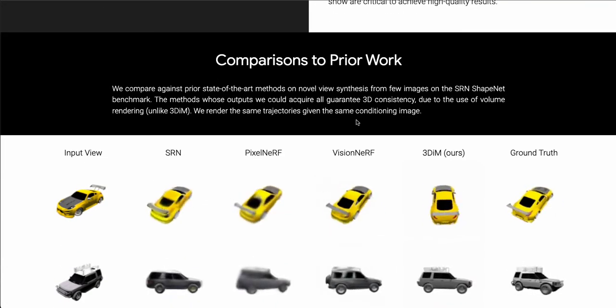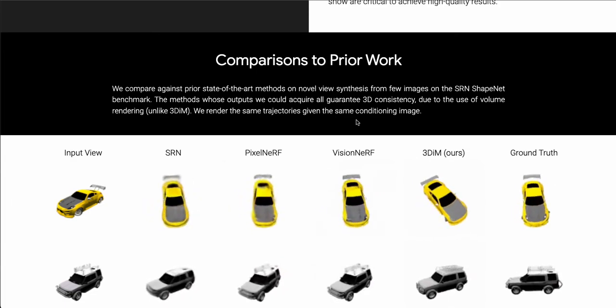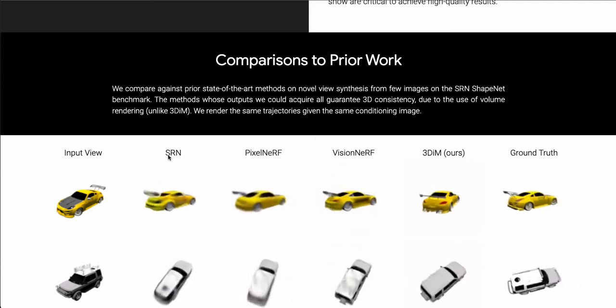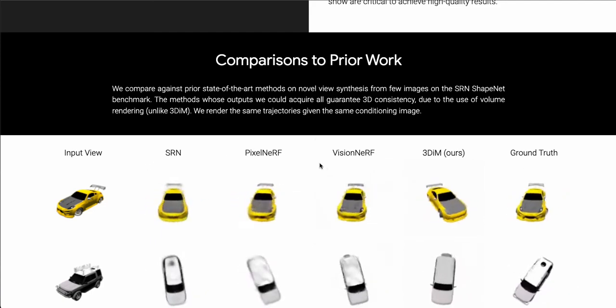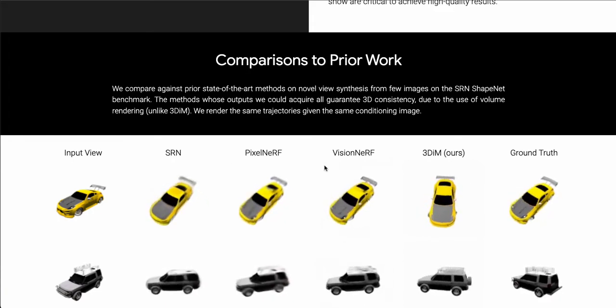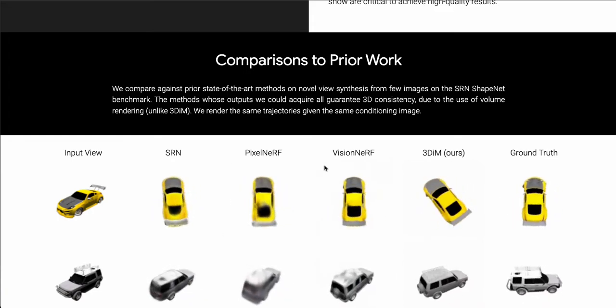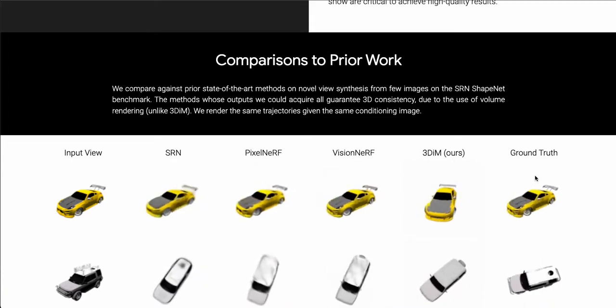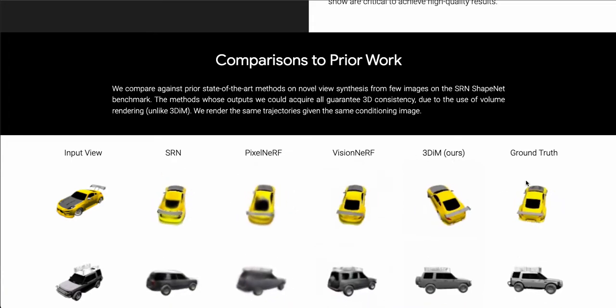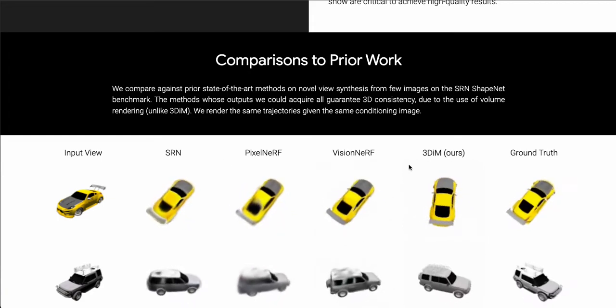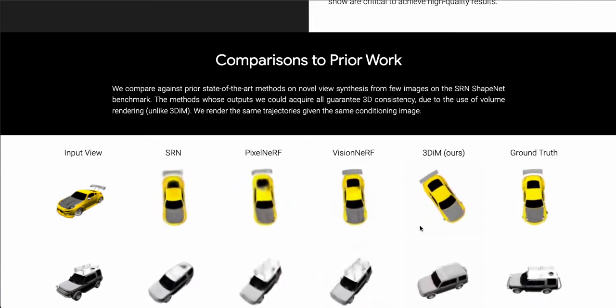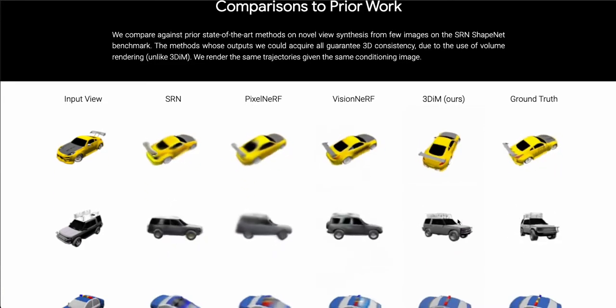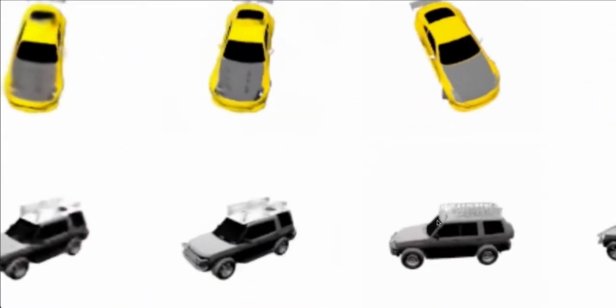Now, this is where you can really see with some forced perspective how good this model is. So these are some other models that try to do this, take a single input or some input and turn it into a 3D model from all perspectives. And you can see that theirs is nearly identical to the ground truth. Now, you can tell that 3D struggles a little bit with meshy things. And it's cool that they included something that doesn't work very well, which is the roof rack on this truck, for instance.